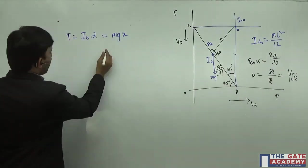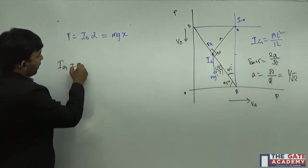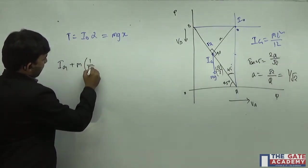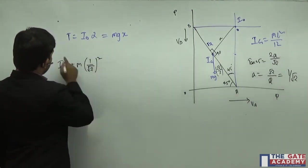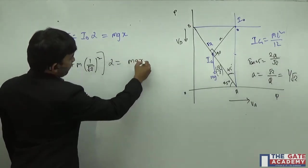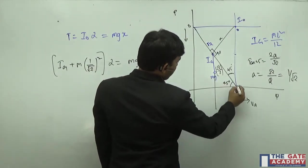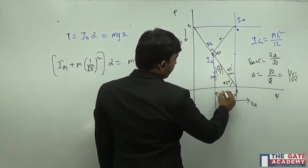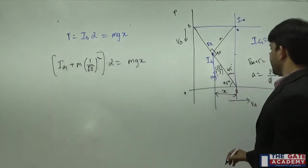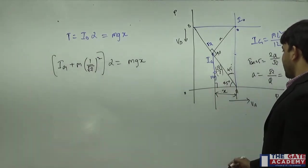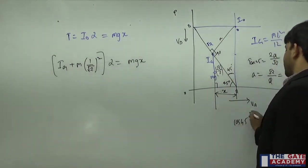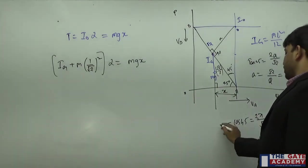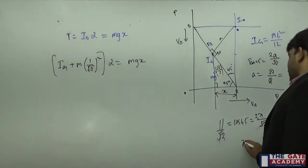Moment of inertia I₀ = moment of inertia about centroid plus m times (1/√2)² = mL²/12 + m/2. Now for the torque, x is the perpendicular distance from the instantaneous center to the line of action of the force mg. This is a 45-degree geometry, so using cos 45 = adjacent/hypotenuse, with hypotenuse root 2 by 2, cos 45 = 1/√2, so x = 1/2. Therefore x equals half.